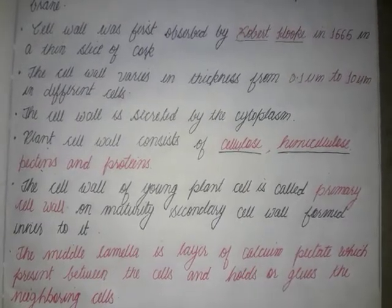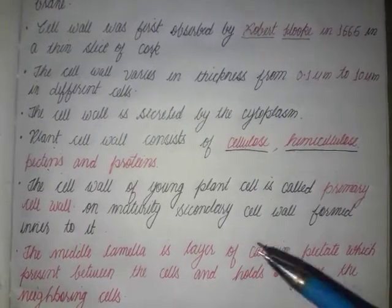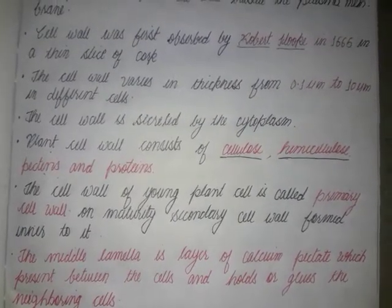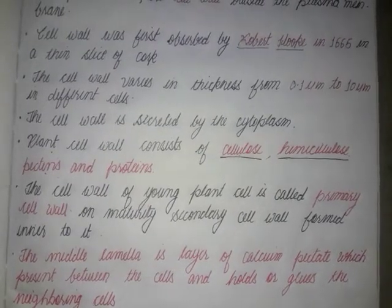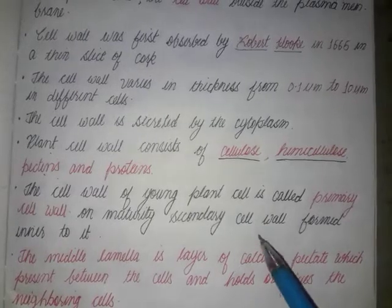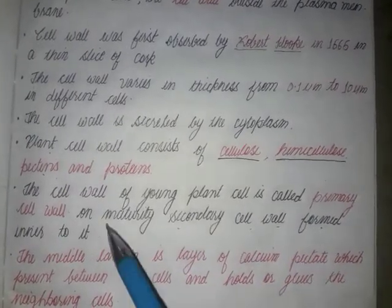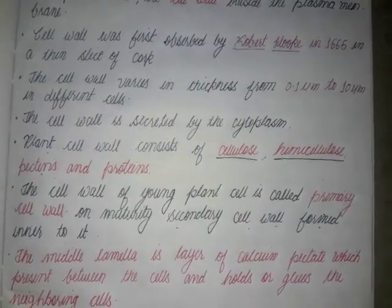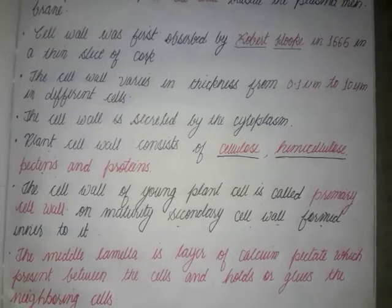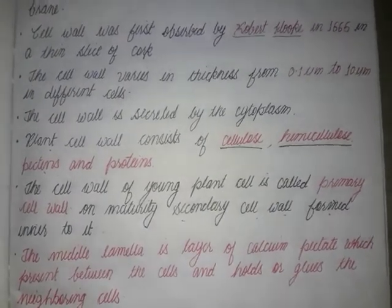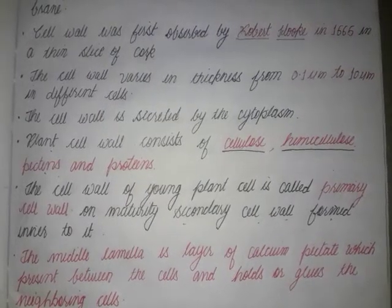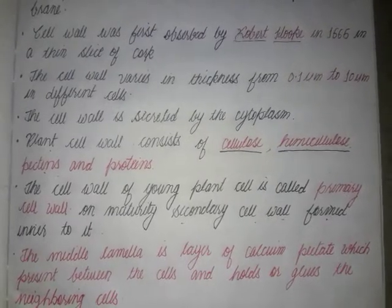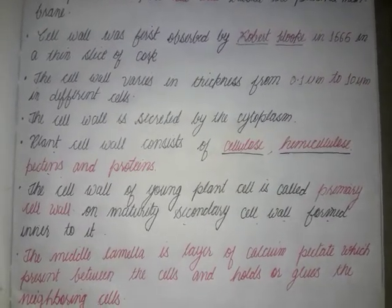As the plant grows and becomes mature, a secondary cell wall forms inner to the primary cell wall. So on maturity, the secondary cell wall is formed inside the primary cell wall. In the case of gymnospermic plants, a tertiary cell wall may also form through chemical deposition as an additional inner layer.